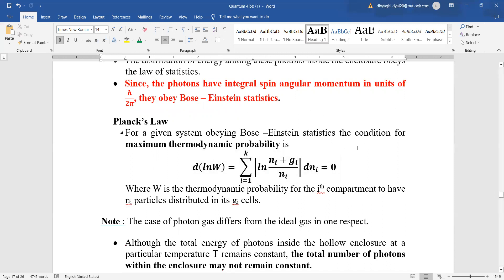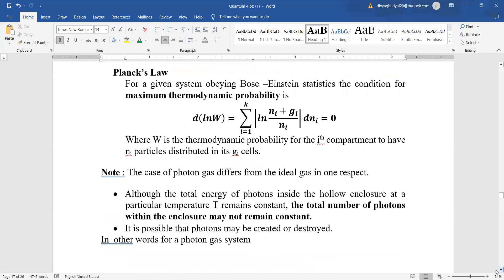From Bose-Einstein statistics, the maximum thermodynamic probability is given by d log w equals summation from i equals 1 to k, ln of (ni plus gi) upon ni times dni equals 0. Here w is thermodynamic probability for the i-th compartment to have ni particles distributed in its gi number of cells.